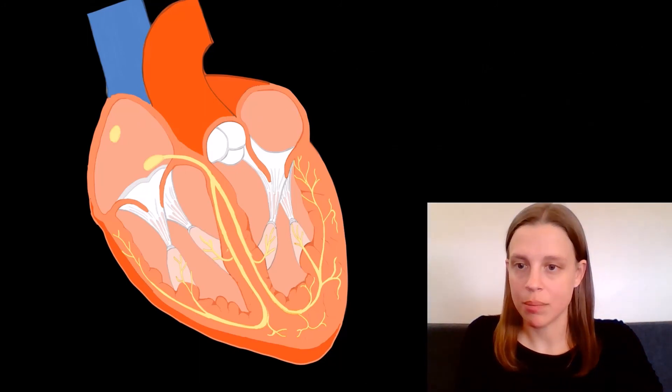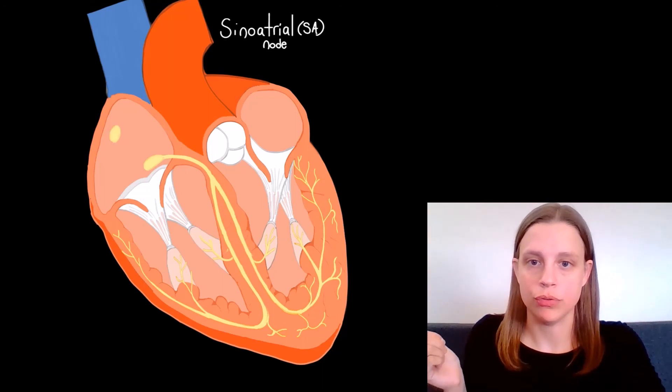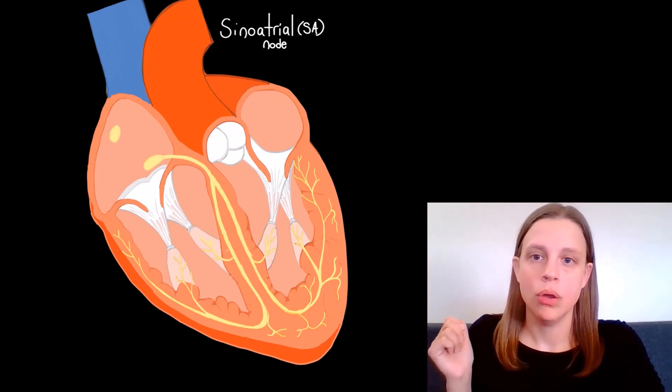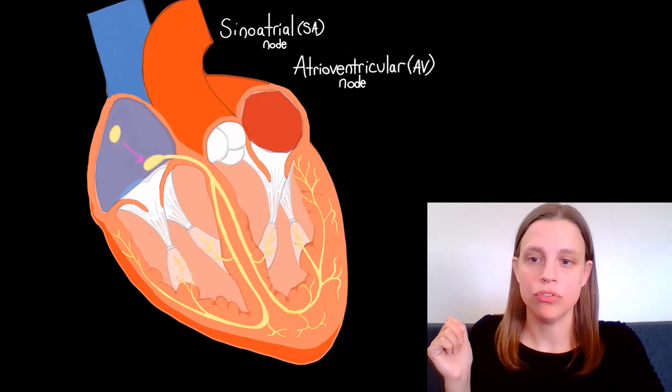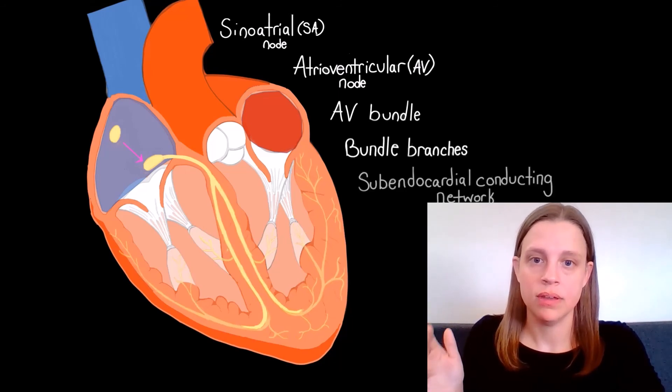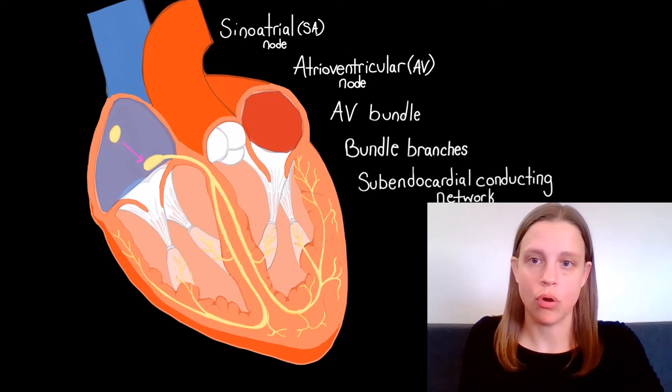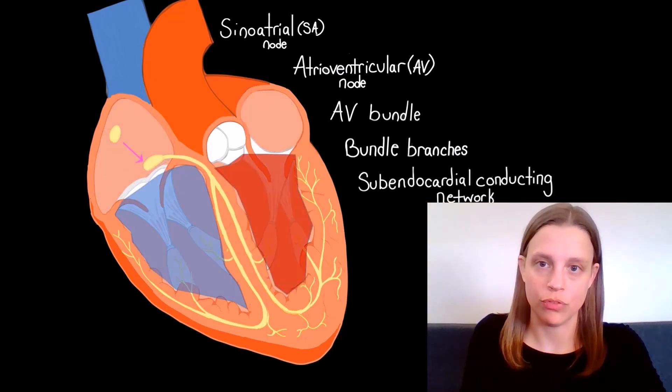To recap, the pacemaker is the sinoatrial node, which causes the atria to contract, and also sends an impulse to the AV node, which leads to the AV bundle, the bundle branches, and to the subendocardial conducting network, which causes the ventricles to contract.